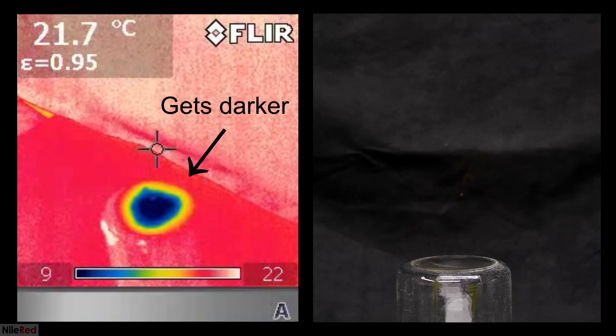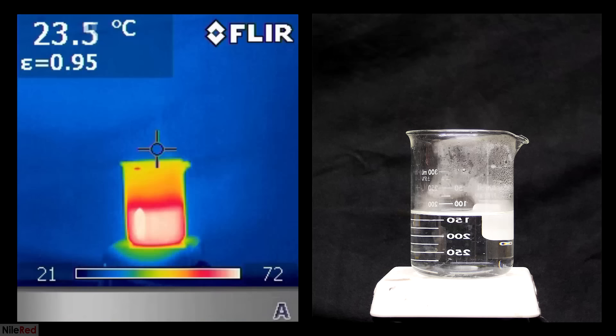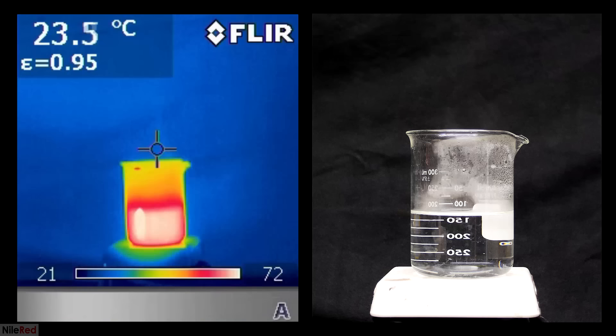When I blow on the acetone, I disrupt the equilibrium by getting rid of the acetone vapors that are sticking around. This leads to an increased rate of evaporation, and we can see the acetone getting a little bit colder.